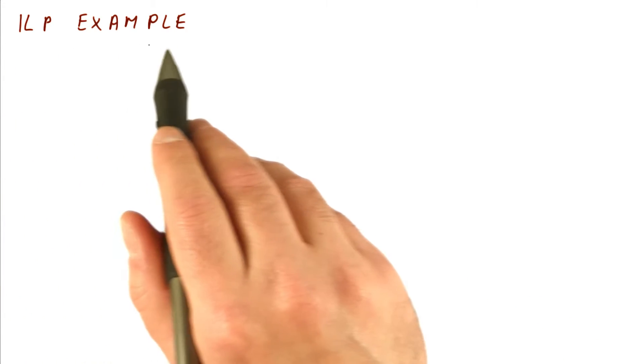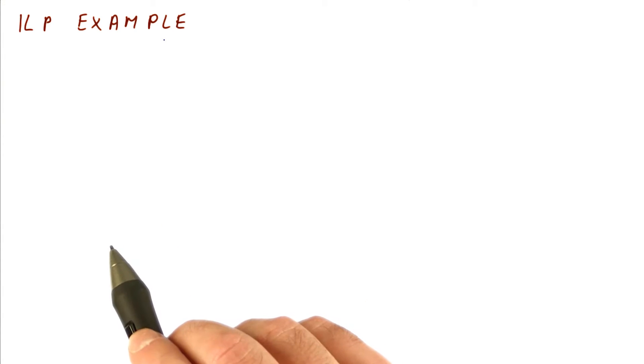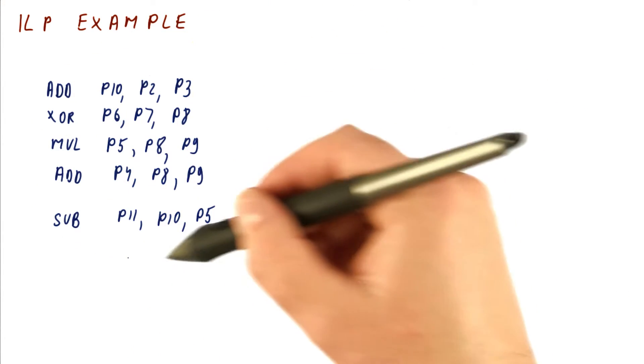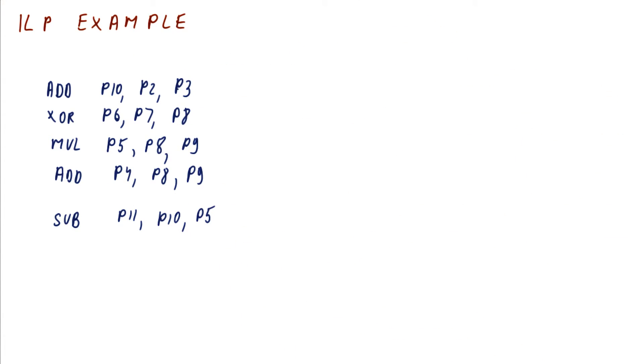Now that we know what ILP is, let's look at an example of computing the ILP. First, we need a program. Let's say we have this program. We have already renamed it so that only the true dependencies remain.